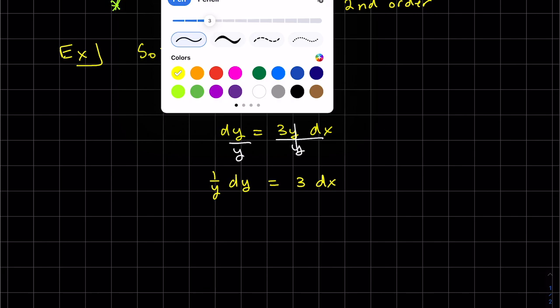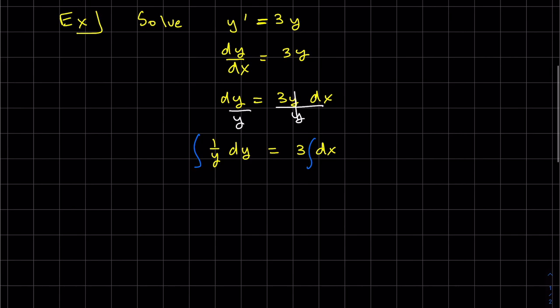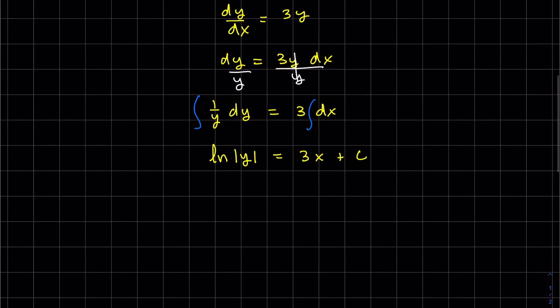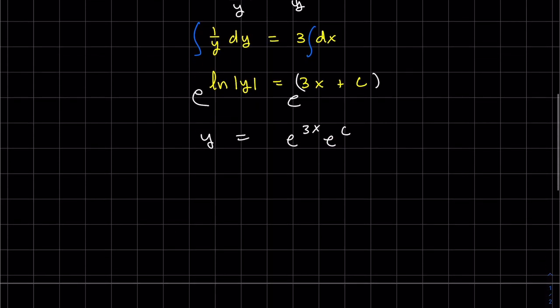Now that they're all separated, we can integrate both sides, because one side's with respect to x, the other with respect to y. That's the natural log of y. And then to solve for y, e on both sides. This is e to the 3x times e to the c. You have the same base, you add your exponents. Don't forget your algebra.